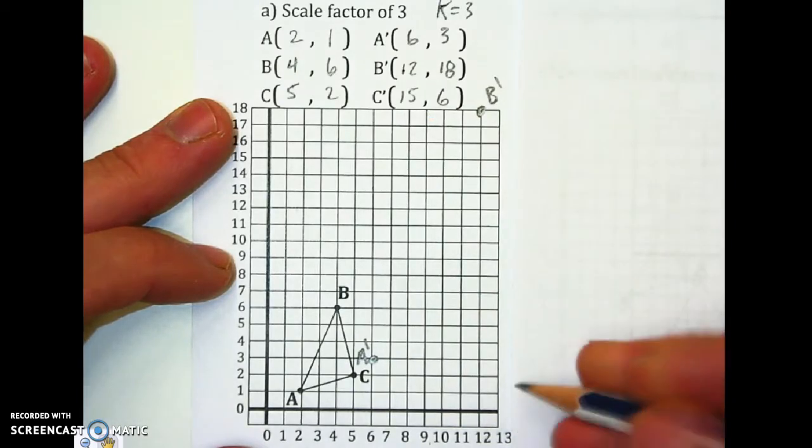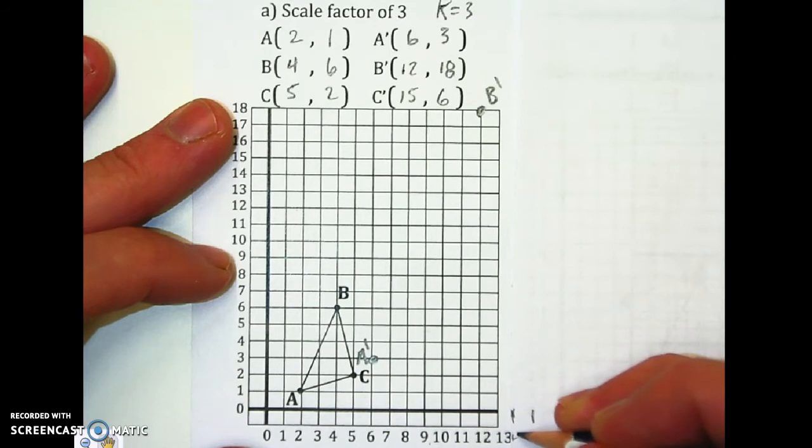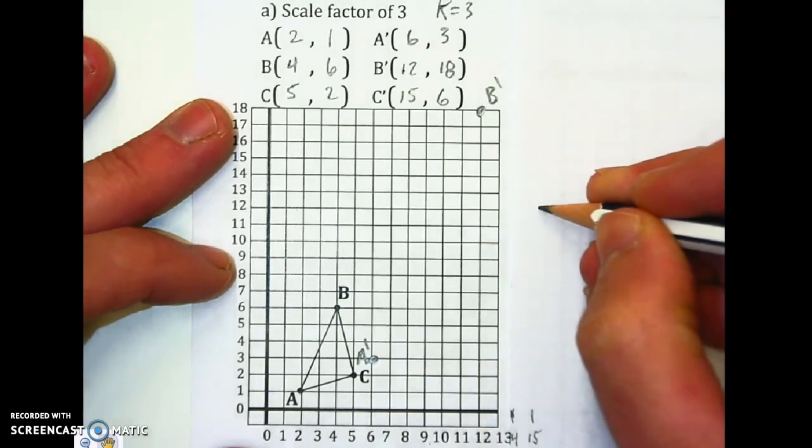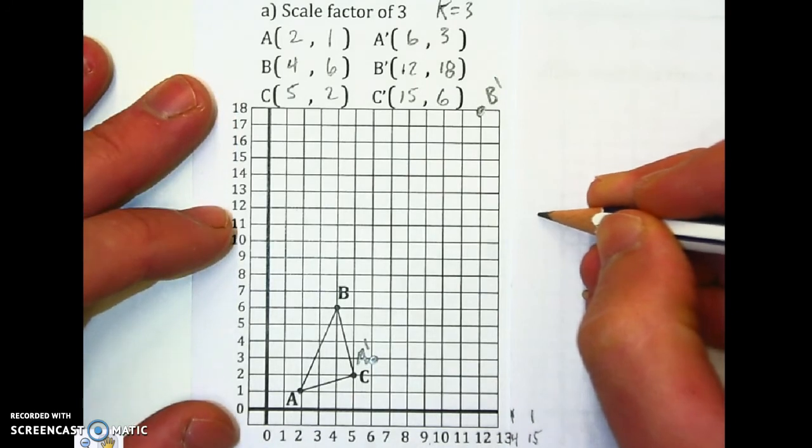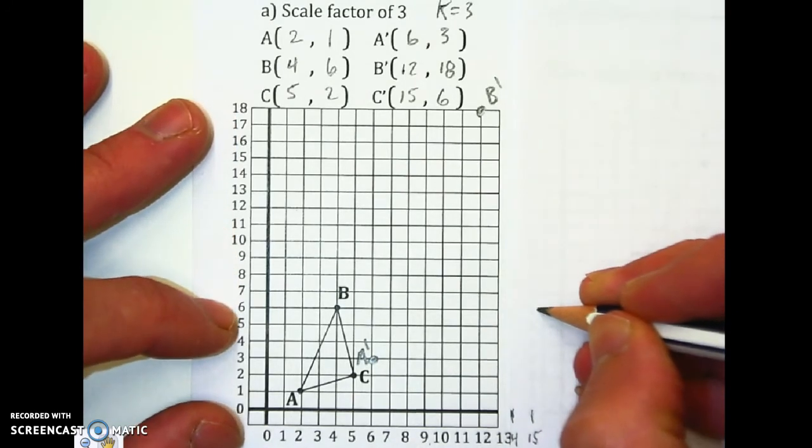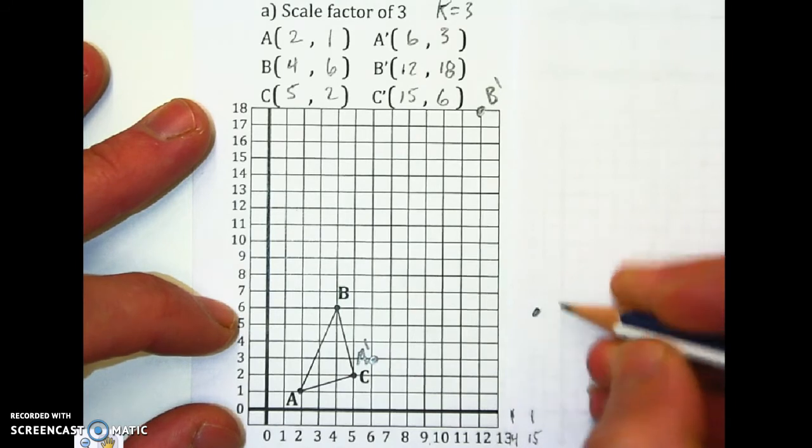15 is off the chart, so I'm going to have to kind of pretend here. Let's say that's 14. And this is 15, so going up to 15, 6 right here. A little bit off, but we can make it work.